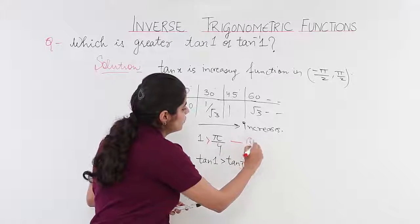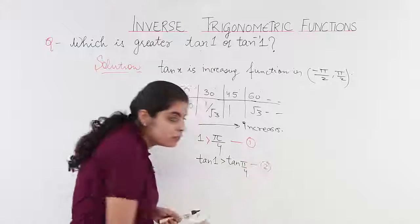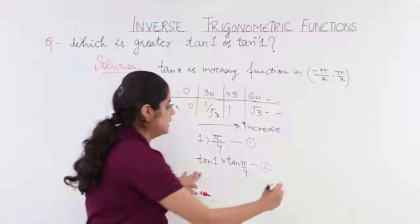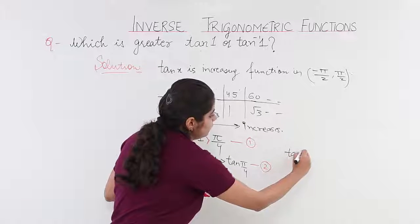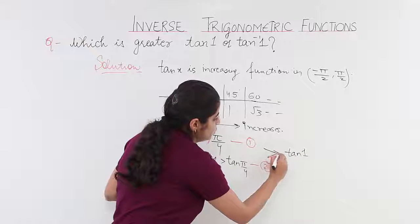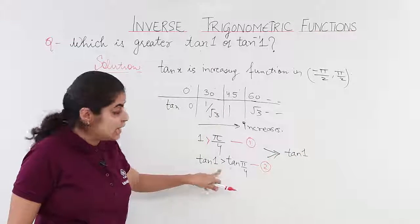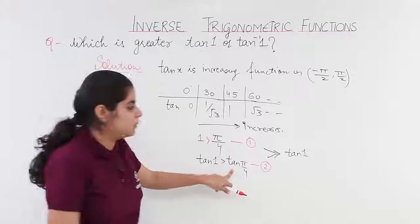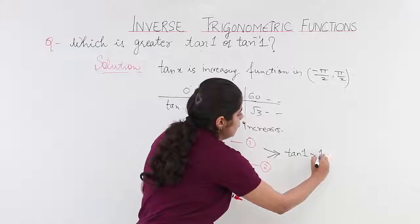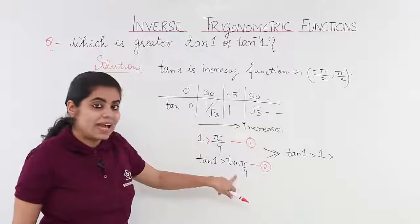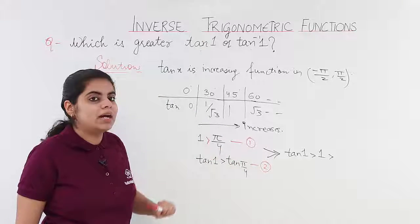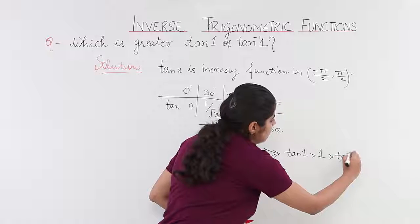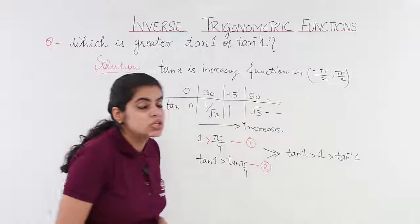So, from these two equations which is equation number 1 and 2, I can compare some things. I can compare that tan 1 from these two equations, tan 1 is greater than 1, that is tan pi by 4. So, it is greater than 1 and it is greater than pi by 4. And what is pi by 4? Pi by 4 is tan inverse 1.